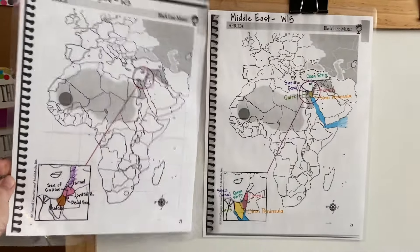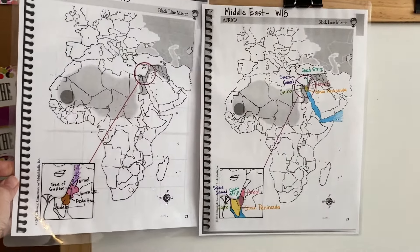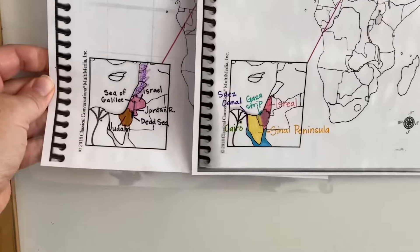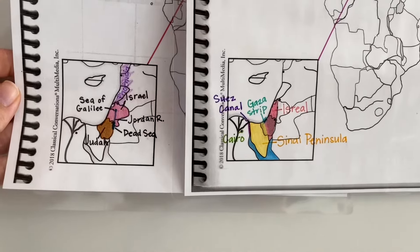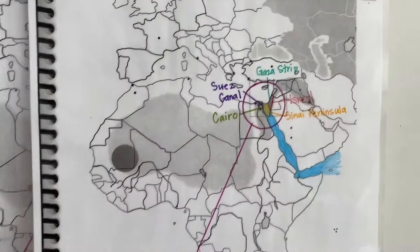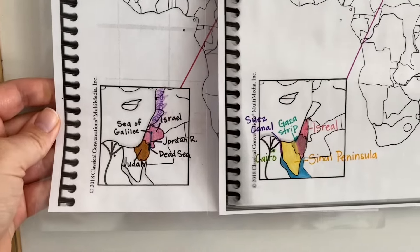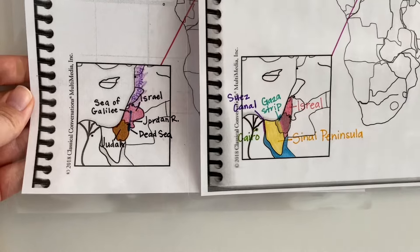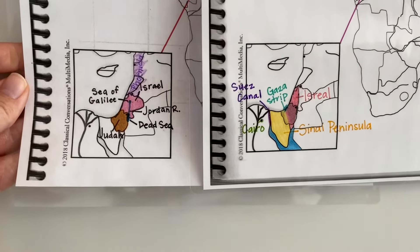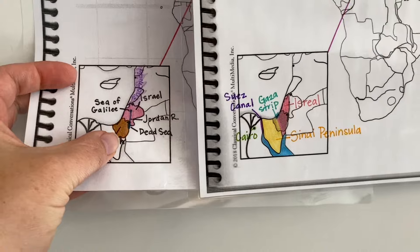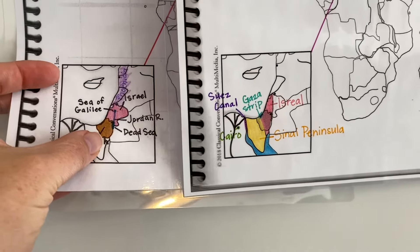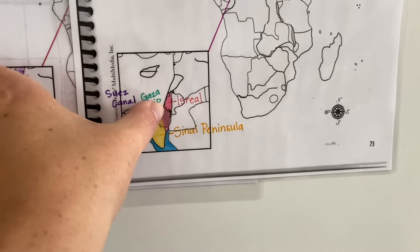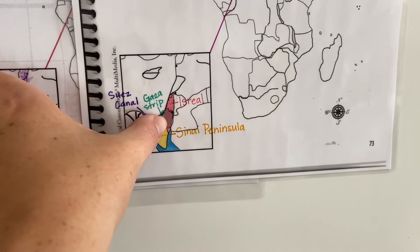I'm going to zoom in here so I can show you something. We already learned that Israel is right down here — this is a little inset — we've already learned where Israel is. But Israel during the Hebrew Empire was much larger, and that big space underneath here was called Judah. Well, Judah no longer exists, and if you look here at week 15 when we're talking about the Middle East, Israel is much larger — it has expanded down.